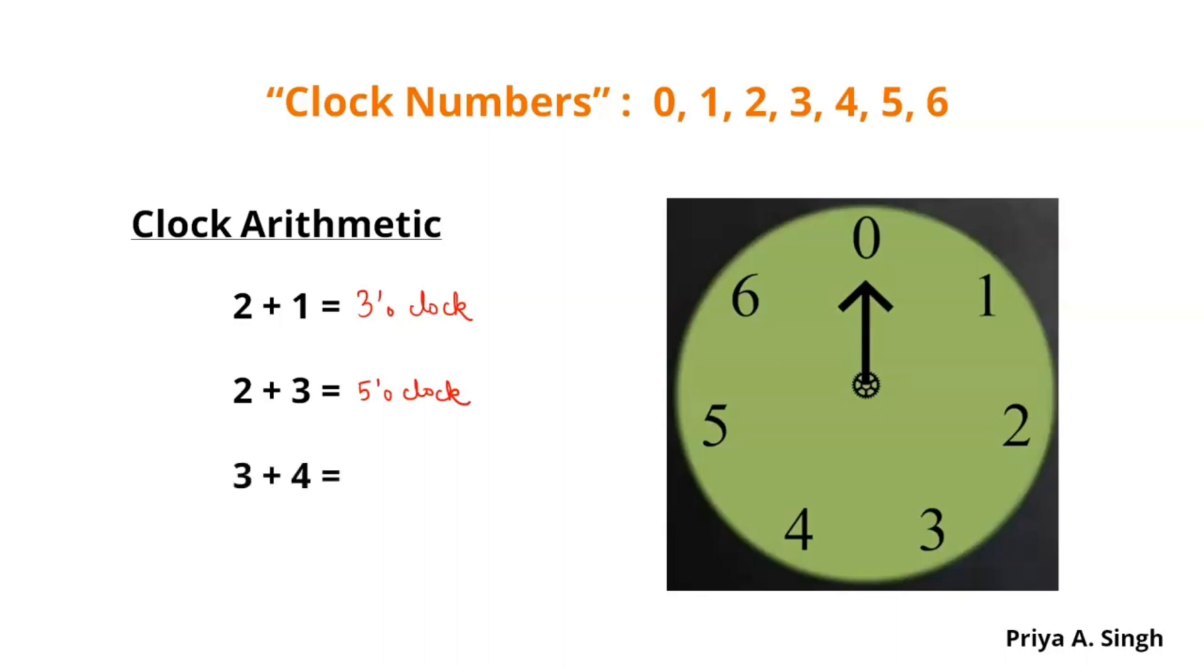If we have to add 3 plus 4, 3 plus 4 is 7 o'clock. But, in this clock, we have 0. So, that it makes 0 o'clock or say the time is 0 in this case.